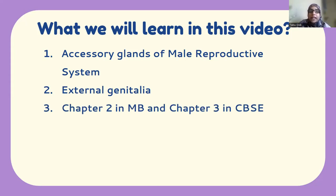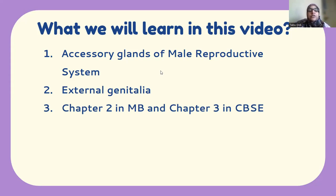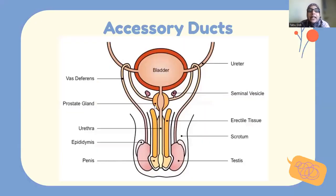What role do the accessory glands play? We saw there were different glands — the prostate gland and bulbourethral gland in the diagram. Please see the previous video so you will be in a better position to understand the accessory glands. We will also cover the last part of the male reproductive system — the external genitalia. The accessory parts include all these ducts and glands.